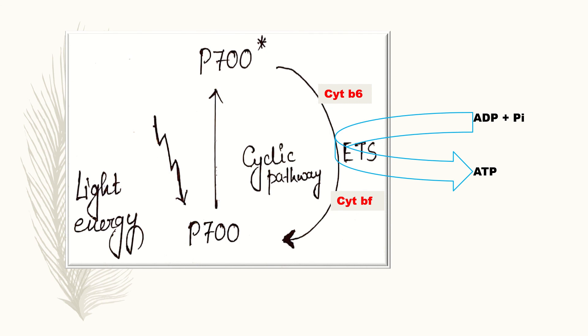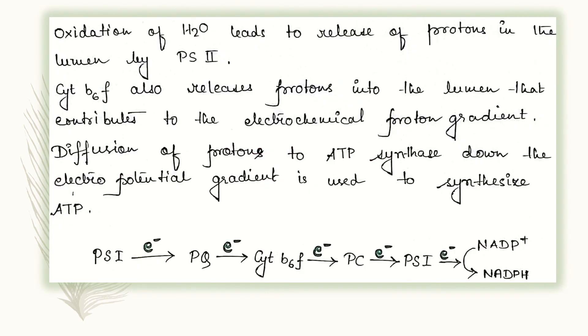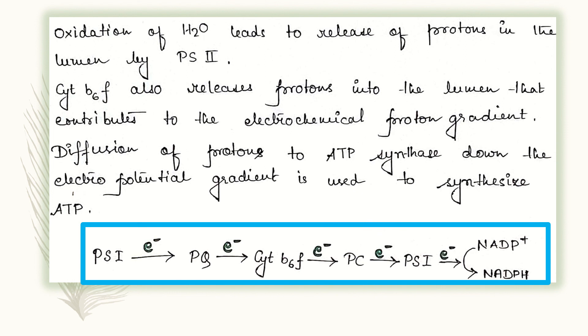So, oxidation of water leads to release of protons in the lumen by PS2. Cytochrome B6F also releases protons into the lumen that contributes to the electrochemical proton gradient. Diffusion of protons to ATP synthase down the electric potential gradient is used to synthesize ATP. So, this is the point that is telling us about ATP synthesis.